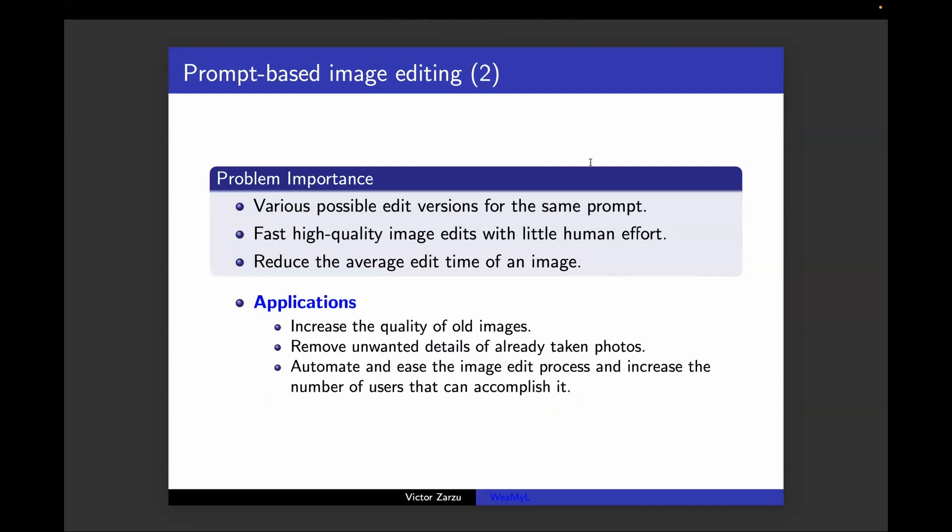There are different applications and importances of this problem. For one image you can have multiple different outputs, and you can have fast high quality image edits with little human effort. For applications, you can increase the quality of images or remove some details that you don't want to be in images you already have. You can also make the edit pipeline accessible for everyone. You don't have to use Photoshop or Illustrator anymore. You can just give a prompt to some model with the desired image and it will take care of the edit for you.